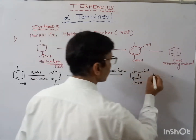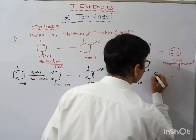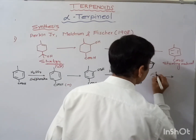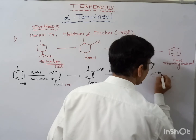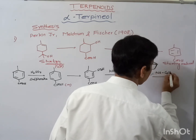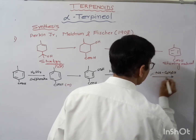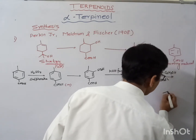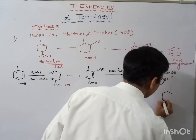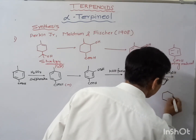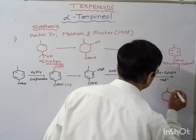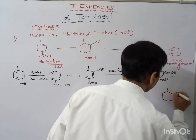By sodium-ethanol reduction, we can convert this aromatic ring into the aliphatic one.